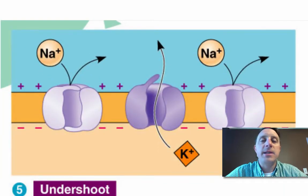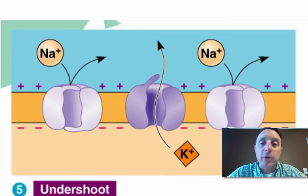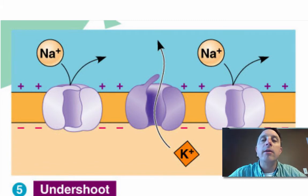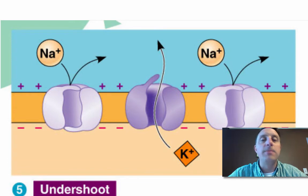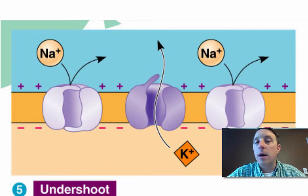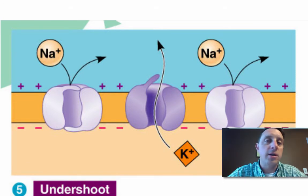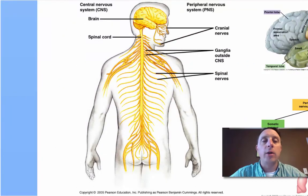The final step, step five, is a little undershoot — very important because this is the refractory period: a short period of time where the neuron is unable to respond to any stimulus. Until the potential comes back up to resting potential, the neuron cannot fire. This is very important in keeping the information transfer in one direction down the axon of the neuron.